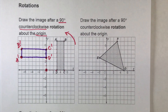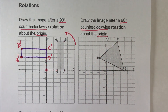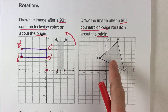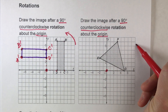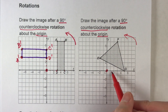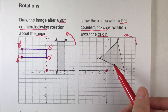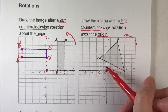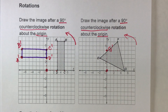Let's do a harder one. Draw the image after a 90-degree counterclockwise rotation about the origin. This one's not a rectangle, so it's gonna be a little bit harder. But again, we're rotating around the origin and we're going counterclockwise. Let's start with the easy point first — point G. G is on the x-axis, five steps away from the origin. When it rotates, it's gonna be on the y-axis, five steps away from the origin.